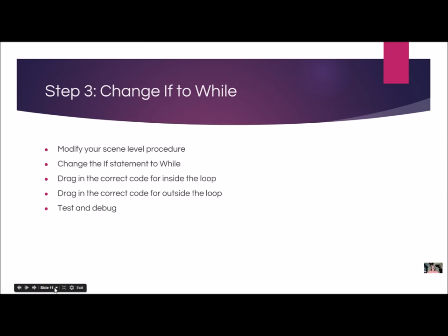Let's go to step three. We've got everything working for the if statement, and now we're going to change it to a while — an indefinite loop. So I only have to click once. Right now you saw I had to click several times. We're going to change it: a slight change from if to while. I click once to put it all in motion and the computer does the rest. We're going to modify our scene-level procedure by changing the if statement to a while, drag in the correct code for the true part inside, drag in code for the false part outside, and test and debug.